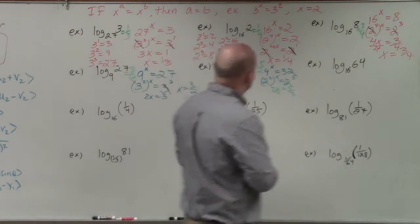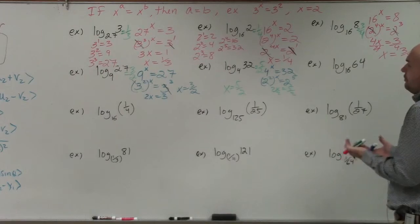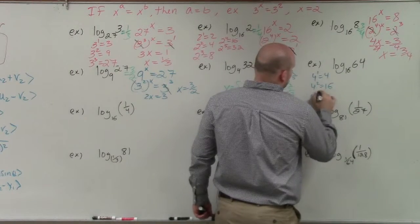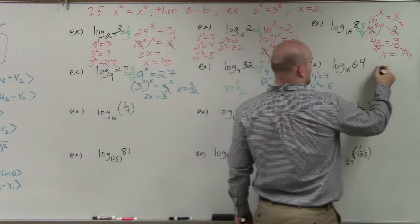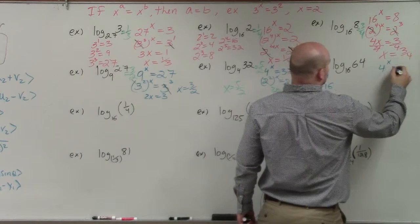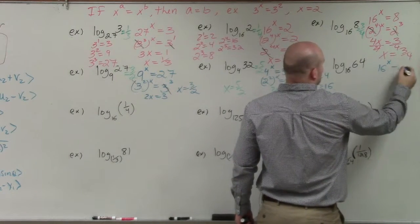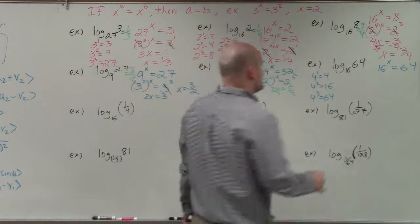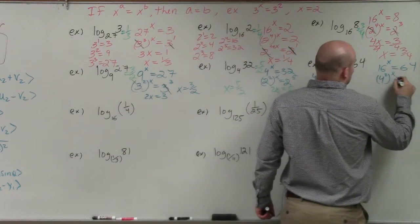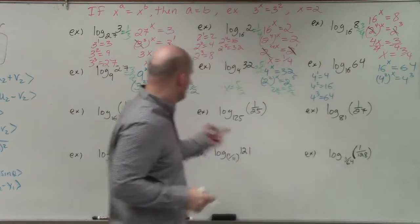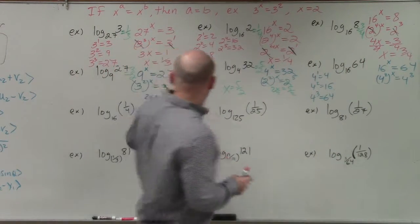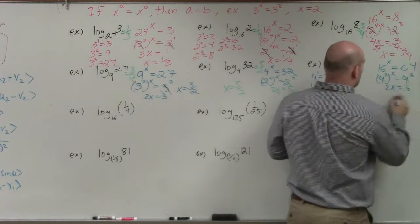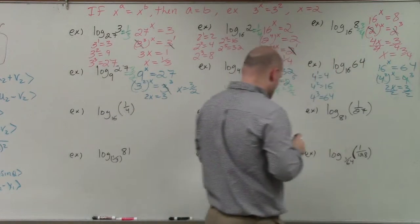For log base 16 of 64, I look at my numbers and see 4 to the first is 4, 4 squared is 16, and 4 cubed is 64. So I write 16 raised to what value equals 64, and rewrite it as 4 squared raised to the x equals 4 cubed. Using the one-to-one property, 2x equals 3, divide by 2, and x equals three-halves.